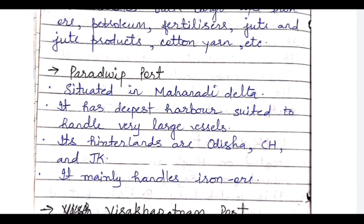Moving further down, the third East Coast port is Paradip port in Odisha, situated on the delta of the Mahanadi river. It is the deepest harbour, suited to handle very large vessels. Its hinterlands are Odisha, Chhattisgarh, and Jharkhand. It mainly handles iron ore, since Odisha has a very large amount of iron ore available. A good way to remember hinterlands is to note which state the port is located in — that state and its neighbouring states form the hinterland.